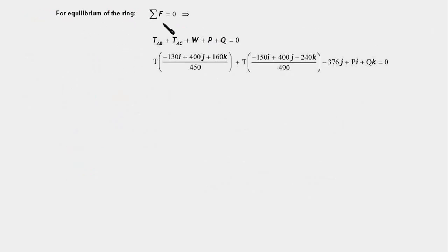So, as I said, for equilibrium of the ring, the sum of all the forces should be equal to zero. This is a vector equation, and this will be equivalent to ΣFx equal to zero. That is, the sum of the x components of all the forces should also be equal to zero.